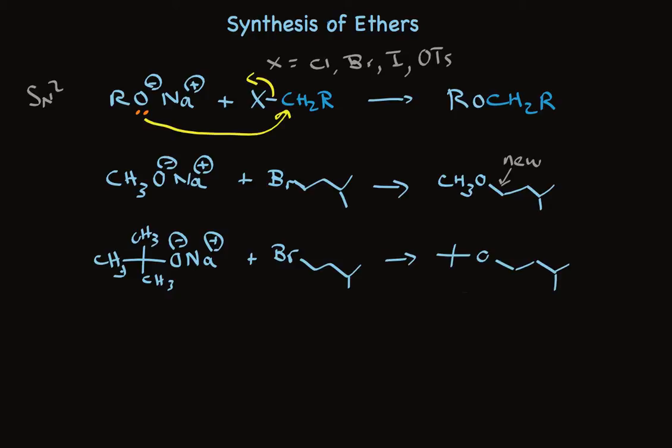In theory, this molecule could be made by putting together a different alkoxide and alkyl halide, using the tertiary alkyl halide and the primary alkoxide. But because this is an SN2 reaction, this tertiary halide does not react. This will result in no product.